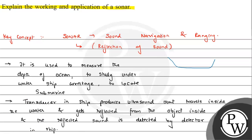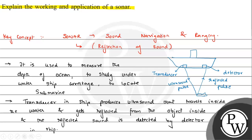Let's suppose we have a ship. Here we have the transducer and detector. The transducer sends an ultrasound pulse, and the reflected ultrasonic pulse is received back. That covers the basic principle and working of SONAR. I hope you understood the solution — all the best!